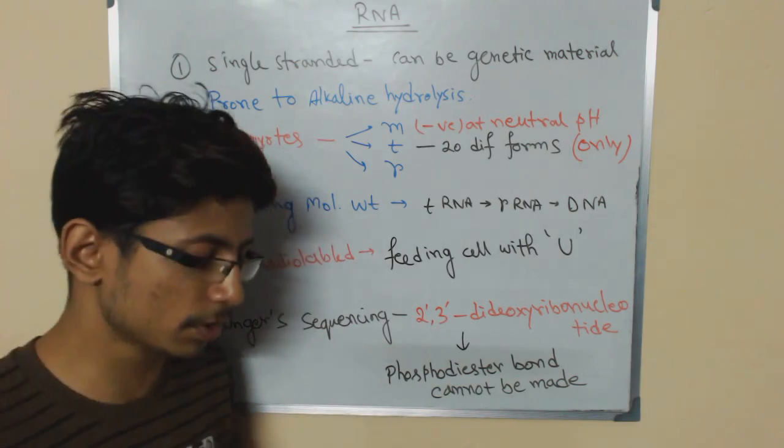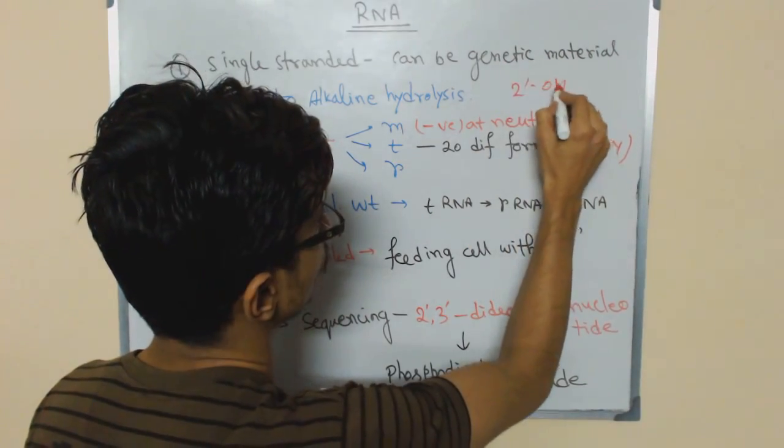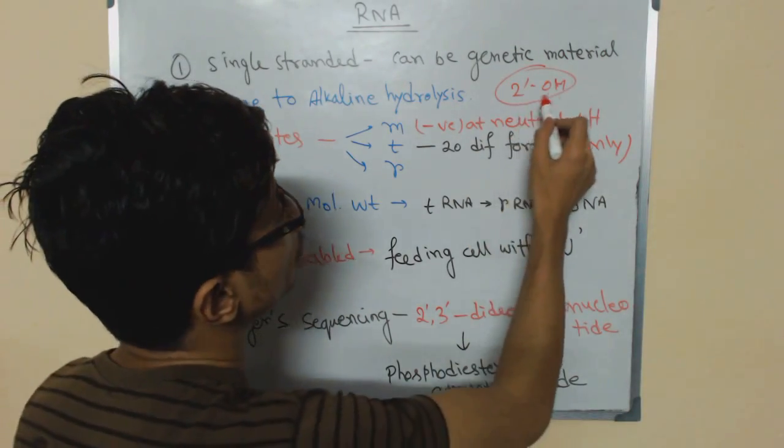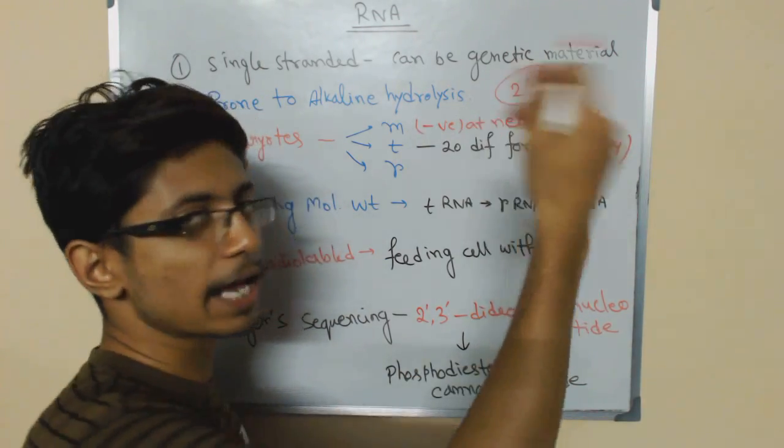Why is RNA prone to alkaline hydrolysis? Because of the presence of 2' hydroxyl in the pentose sugar, that is ribose sugar. The 2' hydroxyl in the alkaline media acts as a hydrolytic agent which will help it to degrade the RNA.